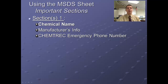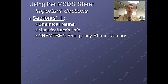Section one also includes the Chemtrek emergency phone number, which is sort of analogous to the Mr. Yuck poison control hotline. If you have an issue with a chemical and need immediate assistance on how to deal with it, you can call this Chemtrek phone number — it's staffed 24/7.